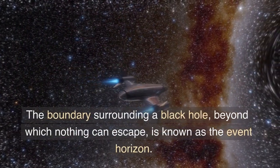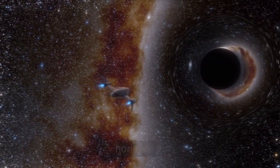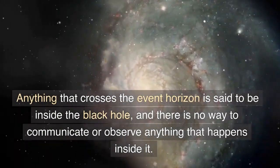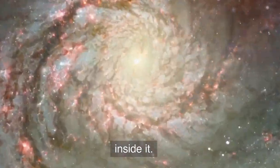The boundary surrounding a black hole, beyond which nothing can escape, is known as the event horizon. Anything that crosses the event horizon is said to be inside the black hole, and there is no way to communicate or observe anything that happens inside it.